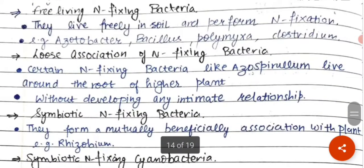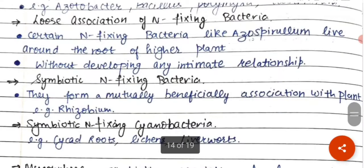Then we have the loose association of nitrogen fixing bacterias. Certain nitrogen fixing bacterias jaise ki Azospirillum — woh kya karte hain, they live around the root of the higher plant and woh ek relationship bana ke rakhte hain plant ke saath.